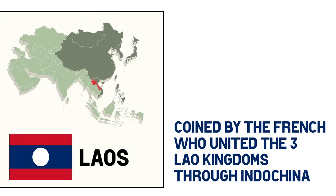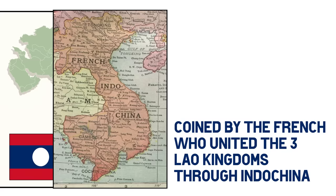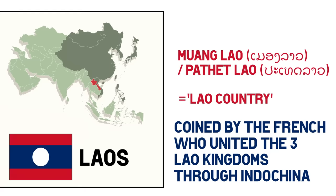Close by is Laos. The term Laos was coined by the French, who united the three Lao kingdoms through their colony of French Indochina in 1893 and named the country after the most common native group, the Lao people. The origin of the name Lao itself is apparently unknown and simply dates back to the name of an ancient tribe from which these people originated. In the Lao language, the country's name is Muang Lao or Pathet Lao, both of which literally mean Lao country.